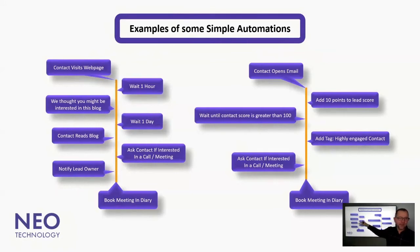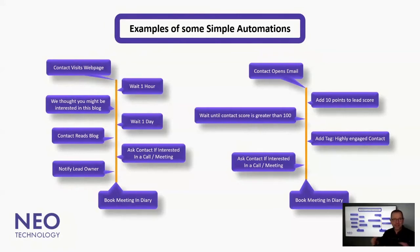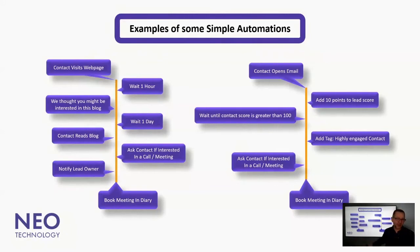Then you can set a time delay — you can say okay, let's reach back out in an hour, a minute, a day, or four days. You decide. And say, 'We thought you might be interested in this blog.'